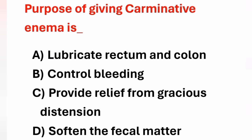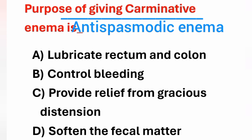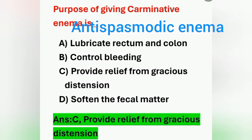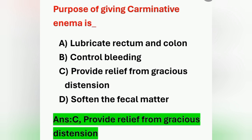Next question: Purpose of giving carminative enema is? Options: A) Lubricate rectum and colon, B) Control bleeding, C) Provide relief from gaseous distension, D) Soften the fecal matter. Carminative enema is also known as antispasmodic enema, which is given to relieve gaseous distension of the abdomen. Option C is the correct answer. To control bleeding or to check inflammation, we give astringent enema. For softening fecal matter, oil enema is given.